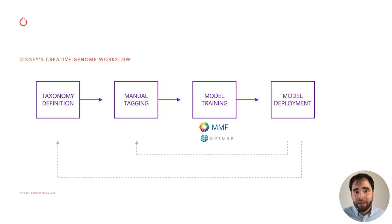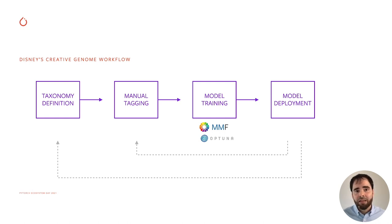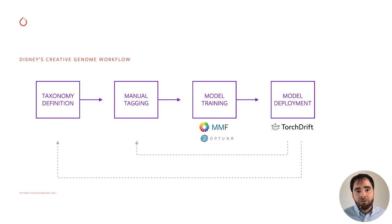By the way, model training relies on tools from the PyTorch ecosystem: MMF for multimodal architectures and Optuna for hyperparameter search. Torchdrift is one of the indicators that triggers the retraining of our models.